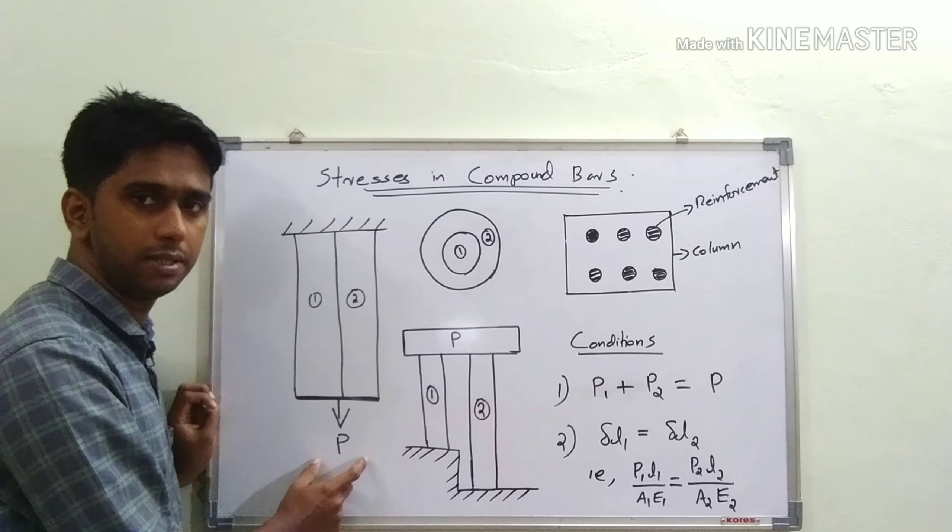This equation is applicable in all these cases, giving us one equation. The second is a compatibility equation that comes from the definition of the composite bar. The composite bar deforms as a single unit, meaning the deformations of both materials will be the same.